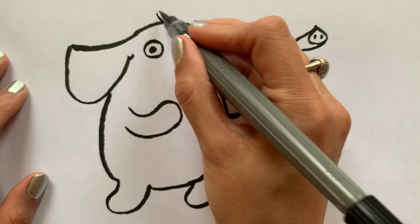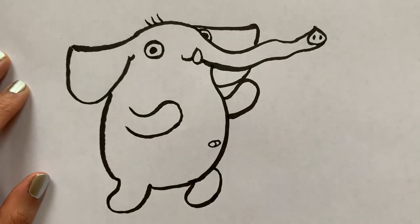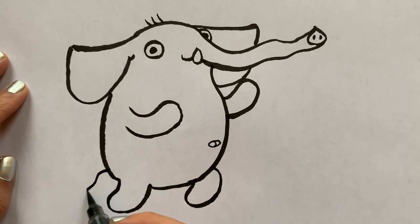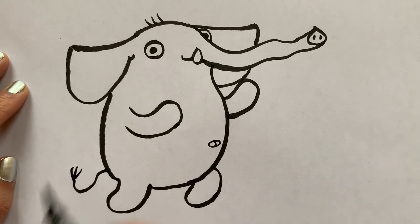She also has three hairs on the top of her head and she also has a tail with just a few lines coming off.